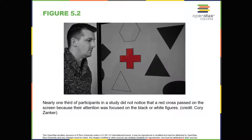Motivation can also affect perception. Have you ever been expecting an important phone call and while taking a shower you think you hear the phone ringing, only to discover it's not? This demonstrates how motivation to detect a meaningful stimulus can shift our ability to discriminate between a true sensory stimulus and background noise — this is called signal detection theory. Signal detection theory has practical applications, such as improving air traffic controller accuracy, as the original research developing the theory was focused on improving controllers' sensitivity to plane blips on radar screens.